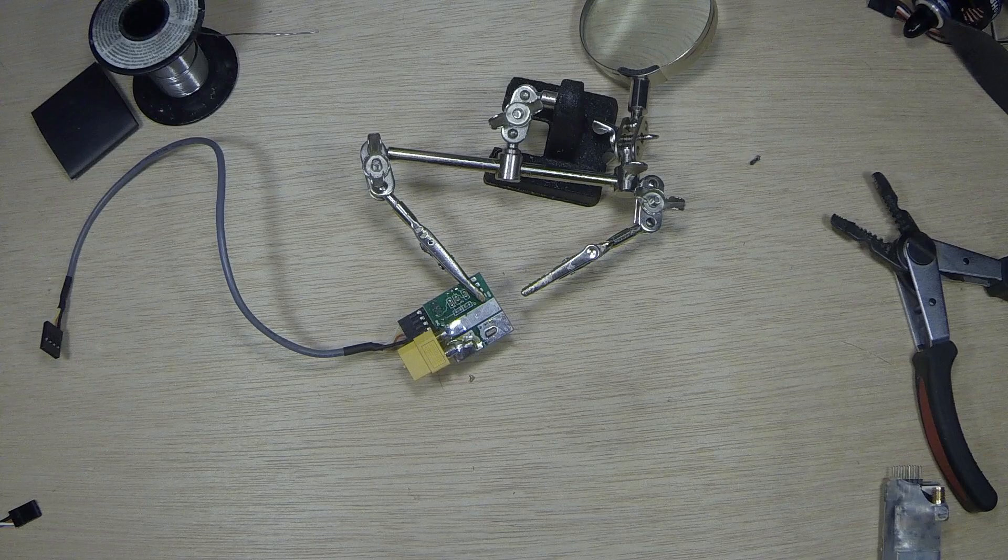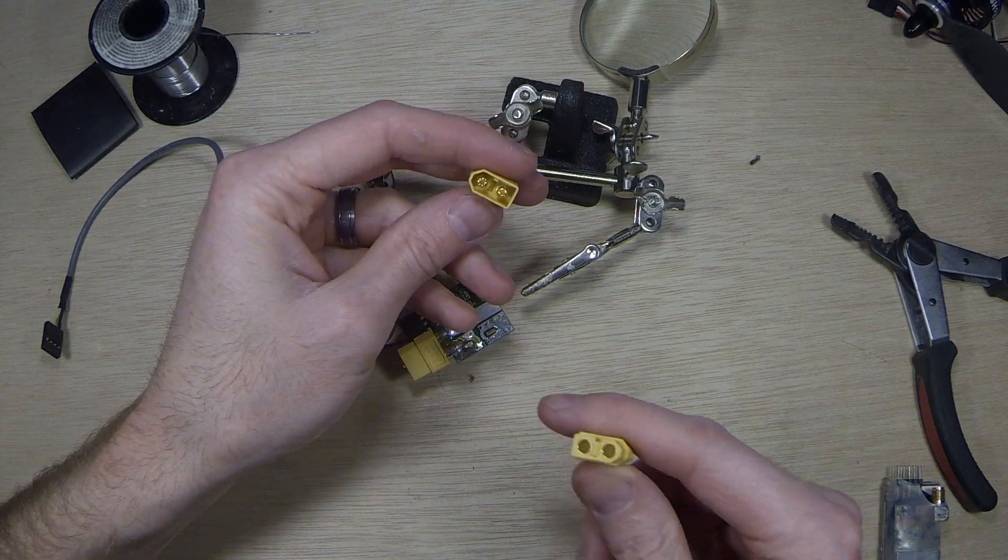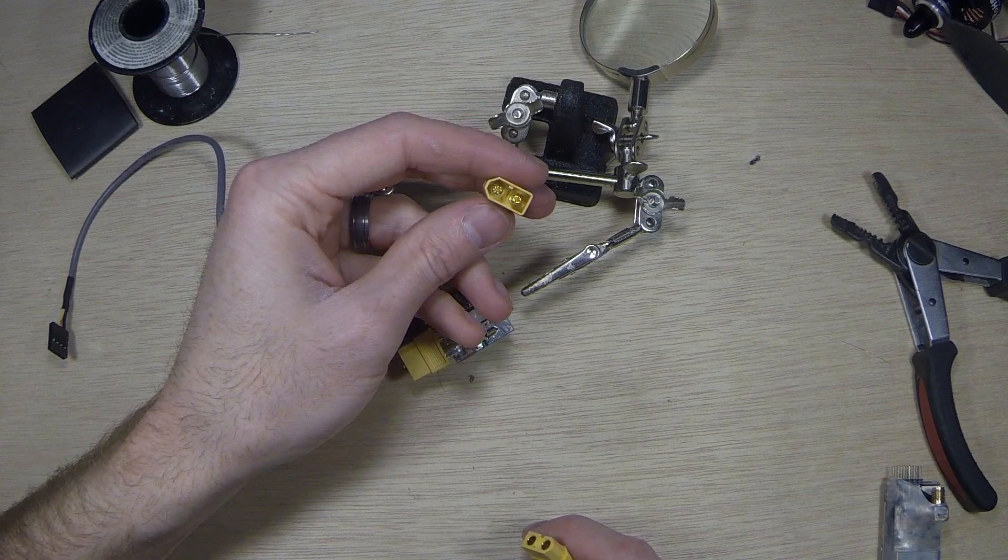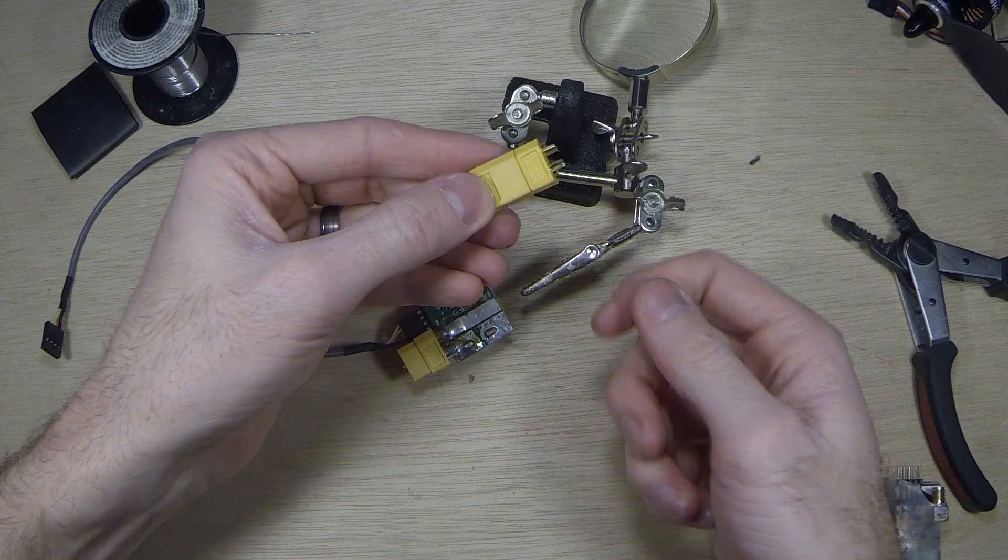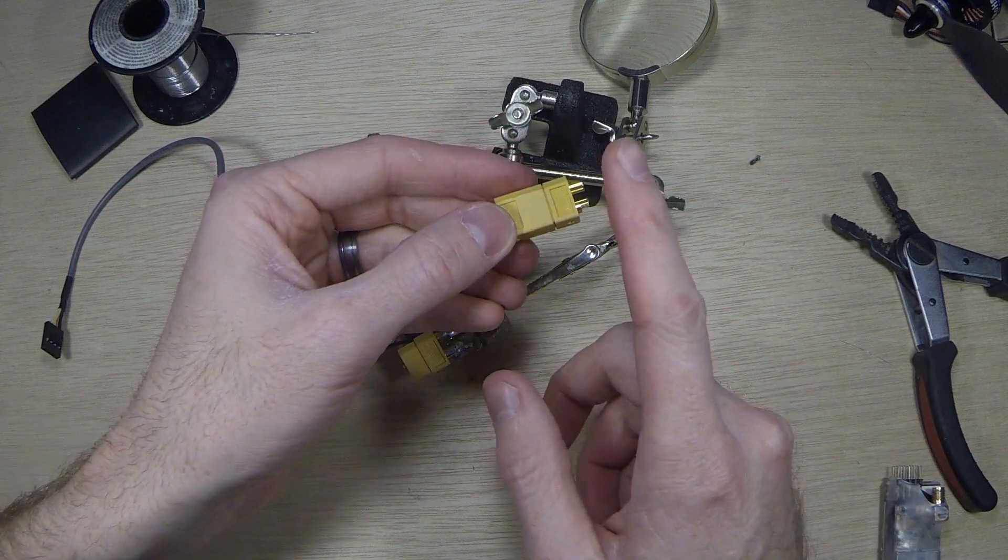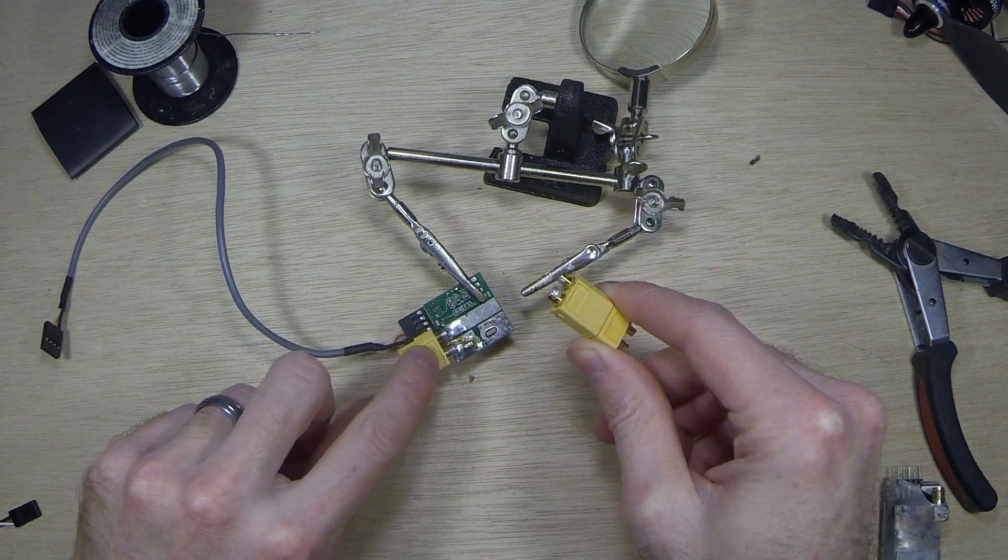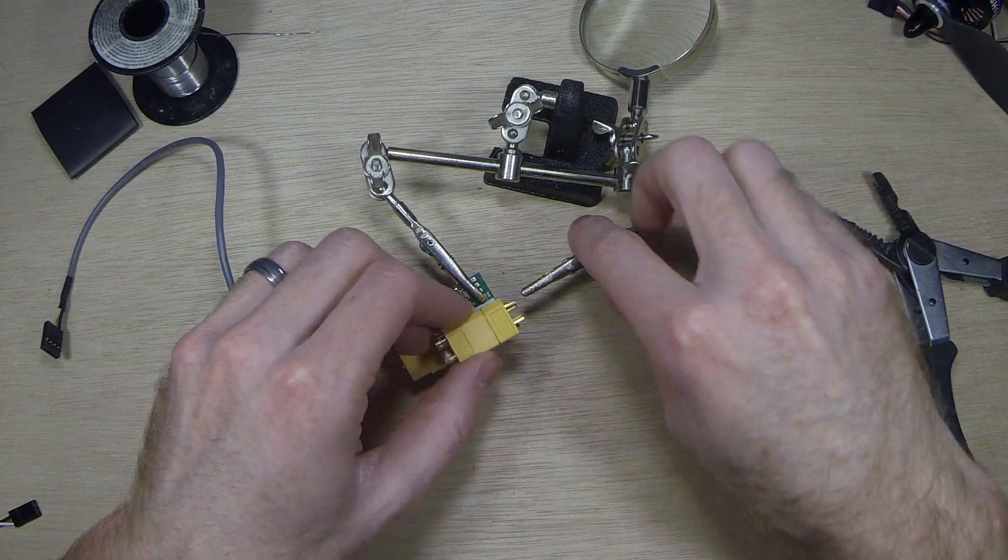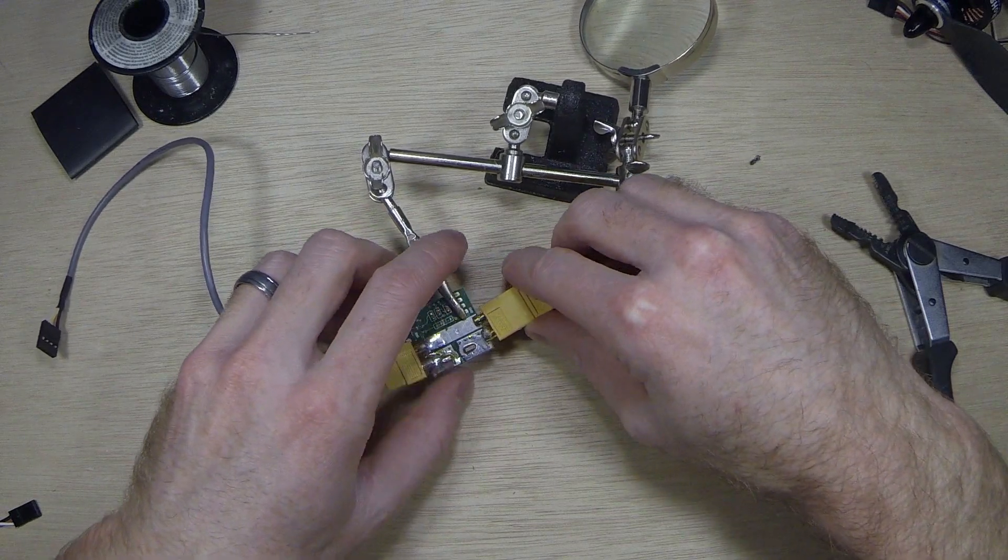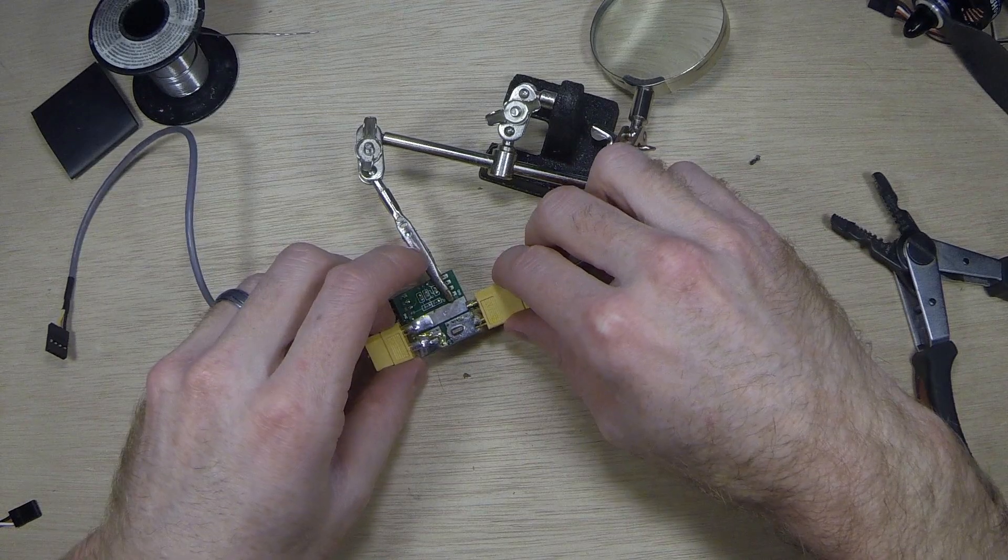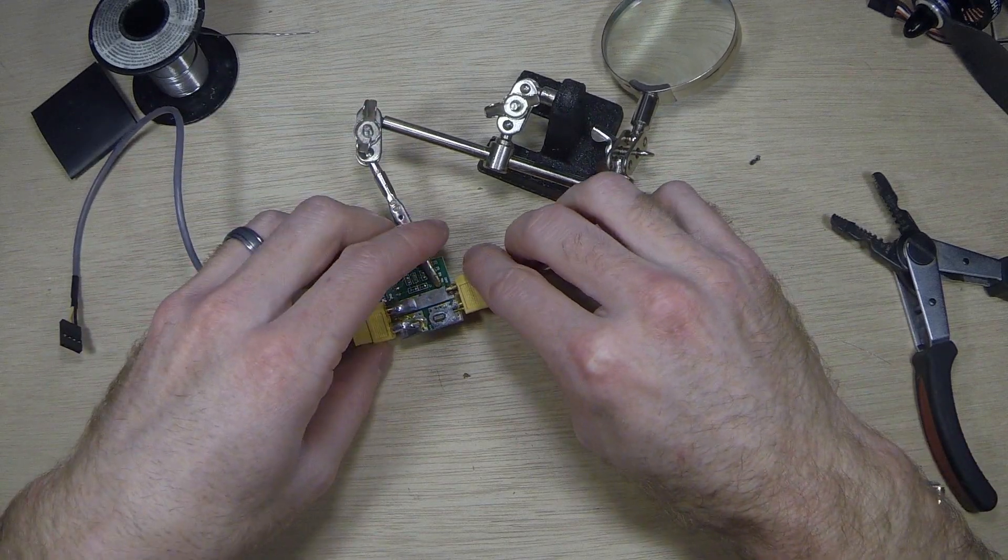Any time that you're soldering the male end of the XT60, you want to make sure to plug a spare female onto it. So that it'll help hold these pins in place. Because there's a lot less material on these ones than on this, holding these in place. So that'll make sure that it doesn't melt through itself. Then, take your time to properly align these so that when you start soldering you don't have to move it around at all.